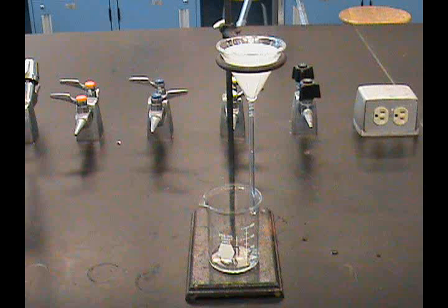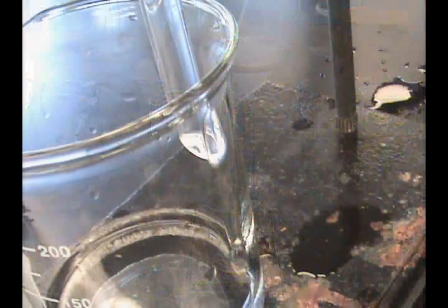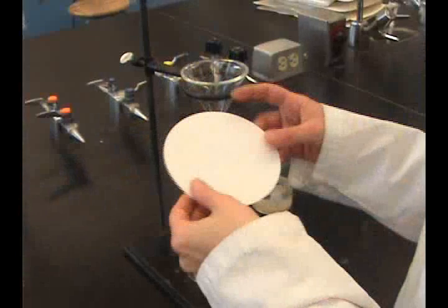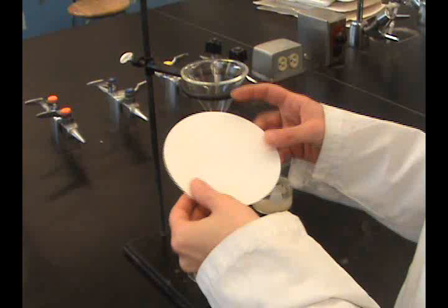Gravity filtrations use filter paper and a funnel supported by an iron ring. The funnel has a long stem with a slanted tip to help the flow of filtrate into the receiving vessel. The filter paper needs to be the correct size to fit into the funnel and the proper porosity is essential as well.